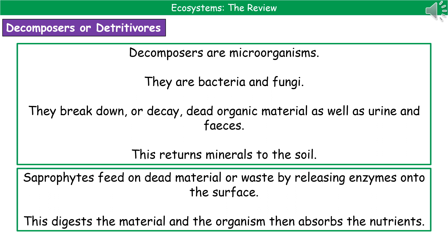One important word to be aware of is saprophyte. A saprophyte is one that feeds on dead material or waste, and the way they do this is by releasing enzymes onto the surface — they secrete enzymes outside and those sit on the surface of the dead material. The enzymes then digest it and the organism absorbs those digested nutrients.